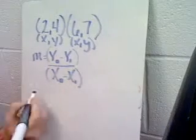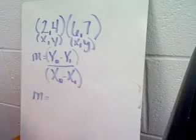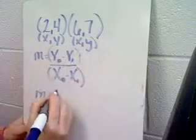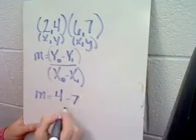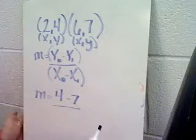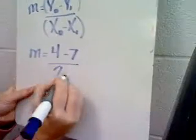In this particular case, I'm just going to substitute in my values. The two different y coordinates are 4 and 7, so I'm going to subtract those, 4 minus 7, and then in the denominator I'm going to subtract the two x coordinates, the 2 and the 6.